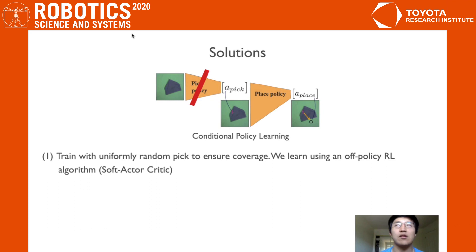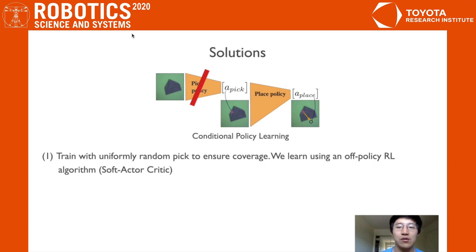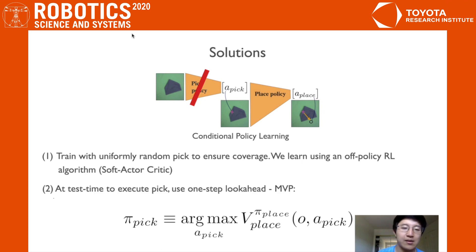In order to address this problem, our paper proposes a solution where we optimize both policies separately. First, we train a conditional place policy using uniformly random picks to ensure coverage, using an off-policy RL algorithm called Soft Actor-Critic. Next, at test time to execute the pick-point, we use a one-step look-ahead — our method MVP — where we maximize the value function in order to select the best pick-point.